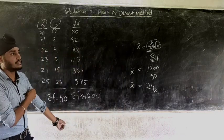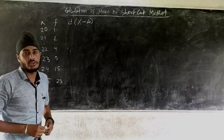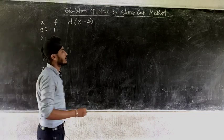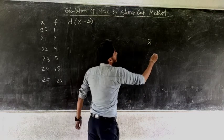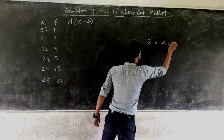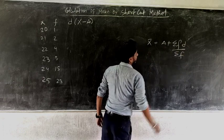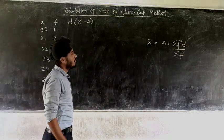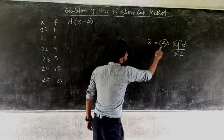Now let us do this same question with the shortcut method. Under shortcut method the formula to find mean is: x̄ = A + Σfd / Σf. Here A is the assumed mean — we will take one value from the x series as the assumed mean.